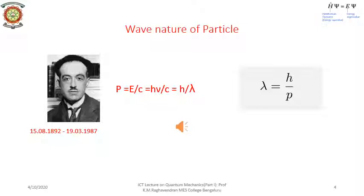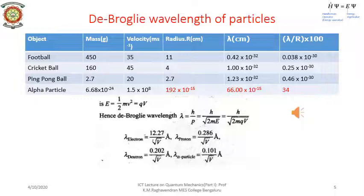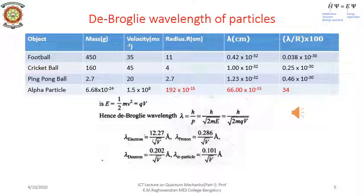In this slide, we have calculated the de Broglie wavelength for a ping pong ball, a cricket ball, a football, and an alpha particle, using realistic values of their masses and speeds. We note that the computed wavelength is extremely small for the ping pong ball, cricket ball, or football, while it is of the same order of magnitude for an alpha particle. Because of the smallness of h, only for particles of atomic or nuclear scale will the wave behavior be observable.